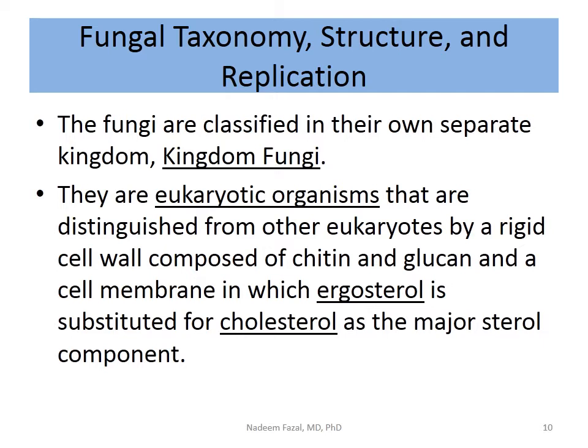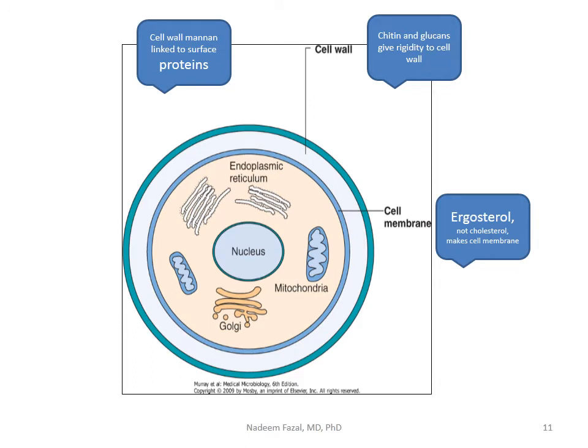Ergosterol is substituted for cholesterol in the fungal cell membrane. We mostly have cholesterol; their cell membrane has ergosterol. That suggests we do have a chance to develop antifungal therapy targeting this difference. A typical fungal cell contains a nucleus, organelles like mitochondria and the Golgi apparatus, ribosomes, endoplasmic reticulum, and a cell membrane. Unlike us, they also have a cell wall — which is why initially we thought they might be plants.